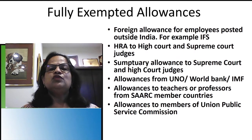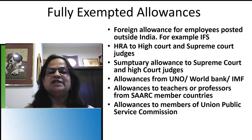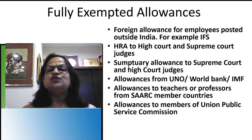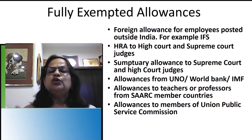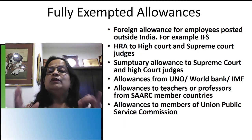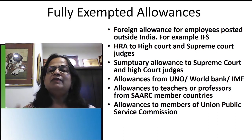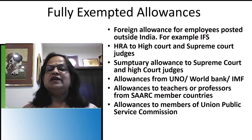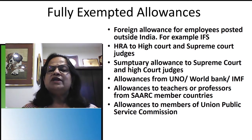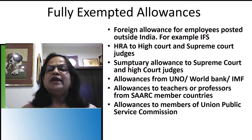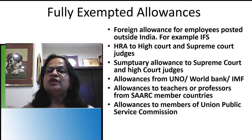The fully exempted allowances begin with foreign allowances for employees posted outside India. For example, IFS officers working as ambassadors in other countries receive allowances that are completely exempted. Second, house rent allowances given to High Court and Supreme Court judges are also fully exempted — these judges receive many preferential benefits.